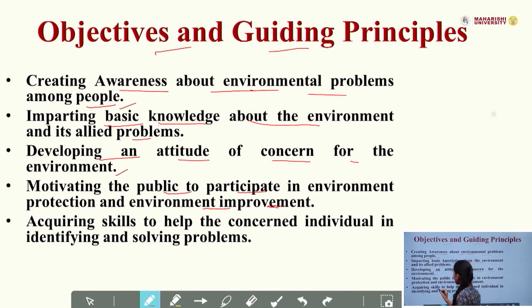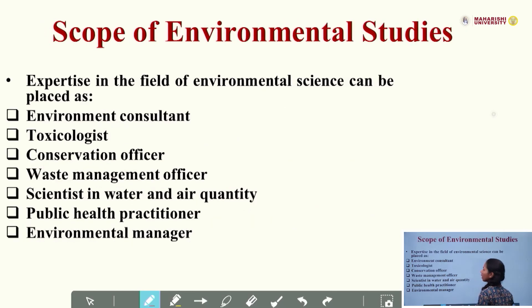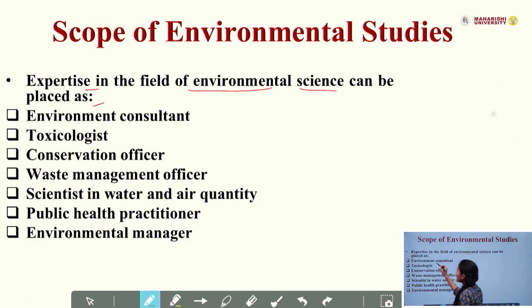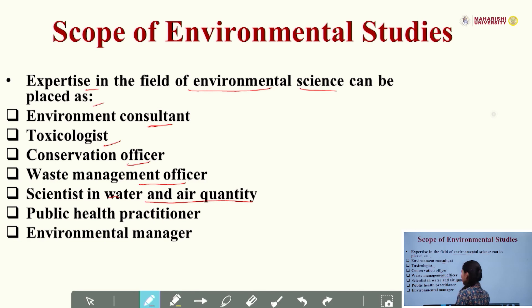And another objective is acquiring skills to help the community and concerned individuals in identifying and solving problems. So what are the scopes of environmental study? There are various scopes, and experts in the field of environmental science can be placed as an environmental consultant, toxicologist, conservation officer, waste management officer, scientist in water and air quality, public health practitioner, and environmental manager.